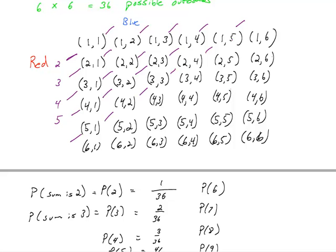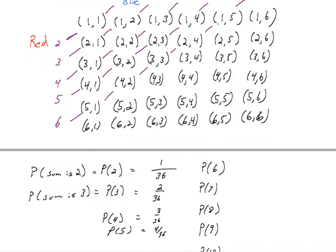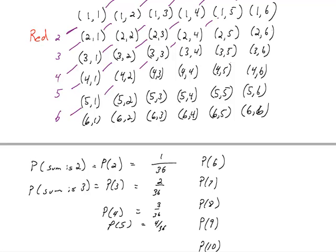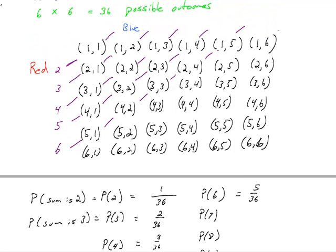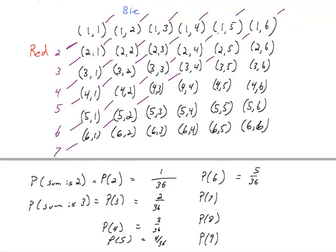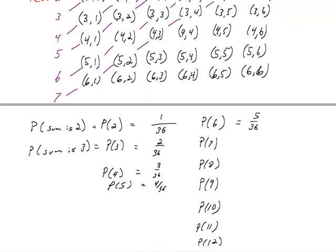So to get a 6, I notice there is 1, 2, 3, 4, 5 of these. So the probability of rolling a 6 is going to be 5 out of 36. The probability we roll a 7, we're on this main diagonal, we see that the 7 occurs most often. And there are 6 possibilities of those. So the probability of rolling a 7 is 6 out of 36.